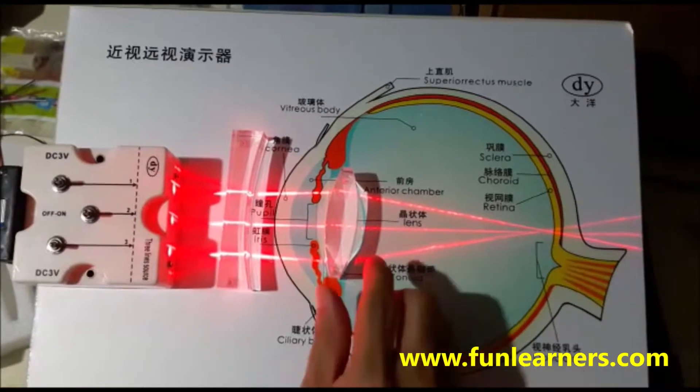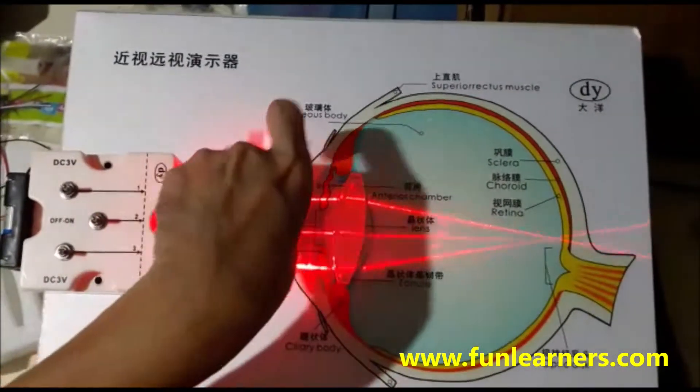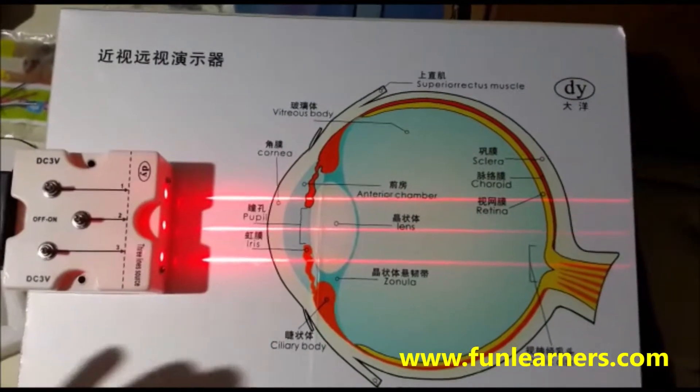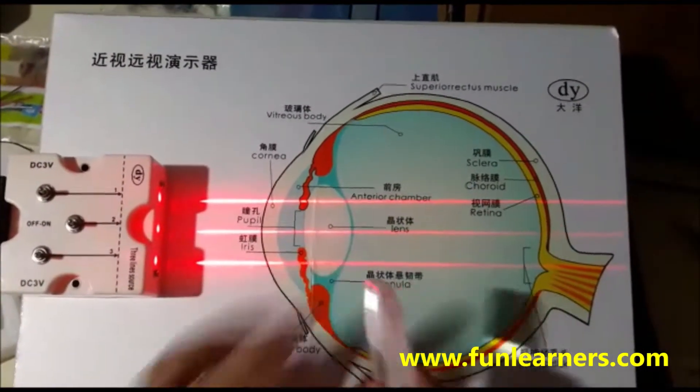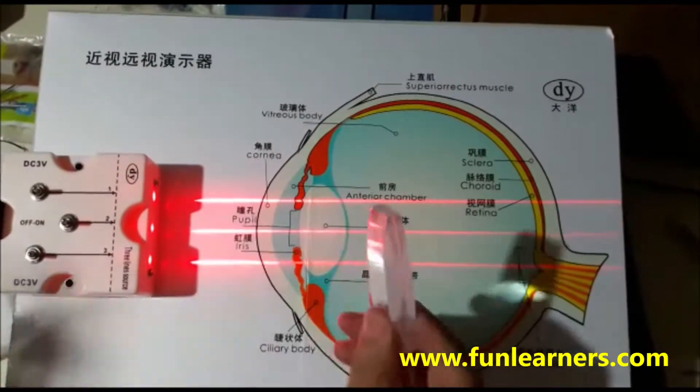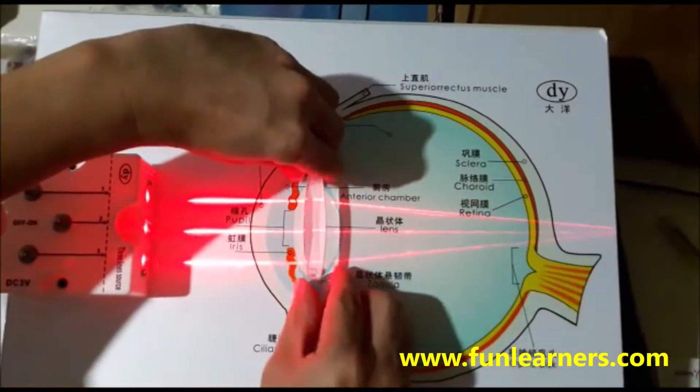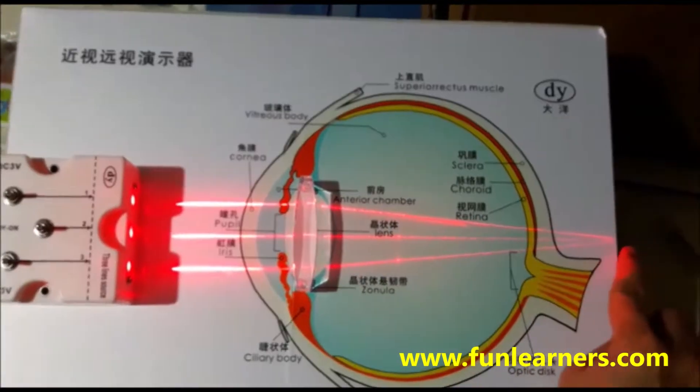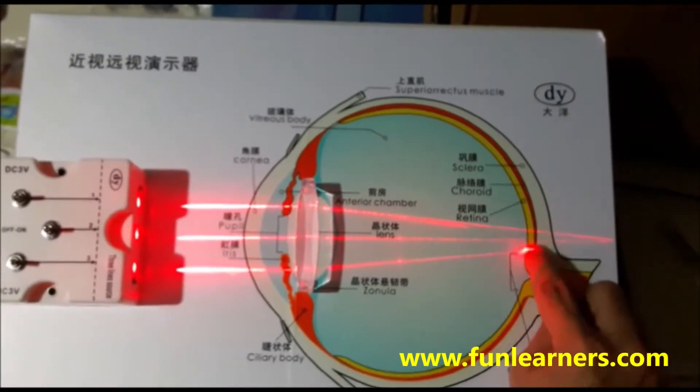Okay, and what about long-sightedness? As the name implies, long-sightedness means the lens is thinner compared to this one. So you can see that the light converges somewhere here, so here is a blur image.